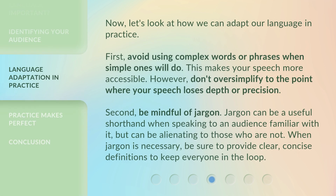Now, let's look at how we can adapt our language in practice. First, avoid using complex words or phrases when simple ones will do — this makes your speech more accessible. However, don't oversimplify to the point where your speech loses depth or precision. Second, be mindful of jargon. Jargon can be a useful shorthand when speaking to an audience familiar with it, but can be alienating to those who are not. When jargon is necessary, be sure to provide clear, concise definitions to keep everyone in the loop.